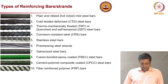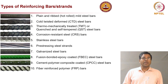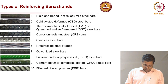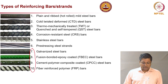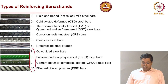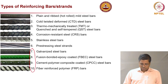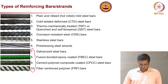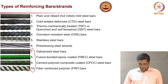This is a recap — you have seen this slide already. What we will cover today is type 7, 8, 9, and 10: galvanized steel rebar, fusion bonded epoxy coated rebar, cement polymer composite coated rebar, and fiber reinforced polymer rebar.